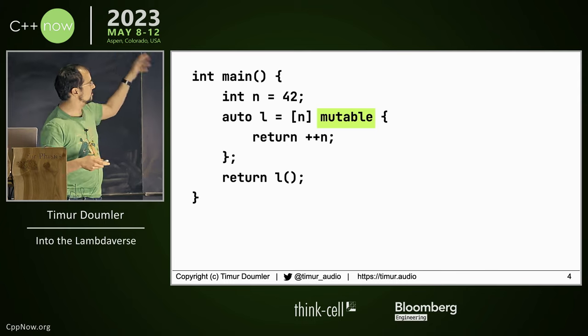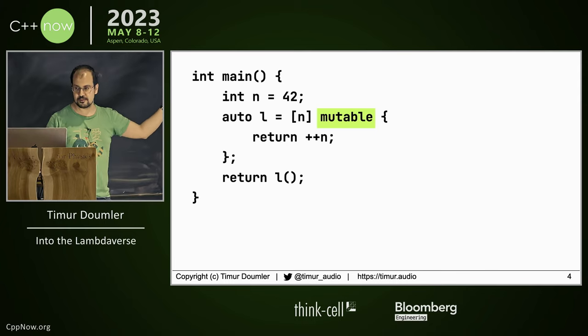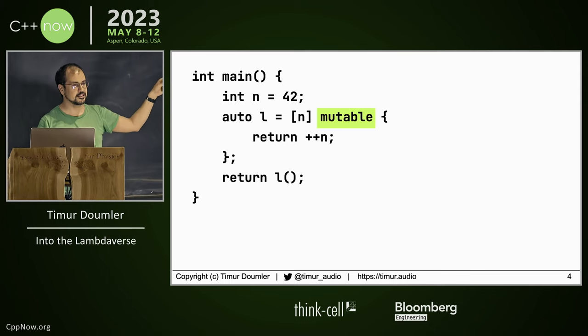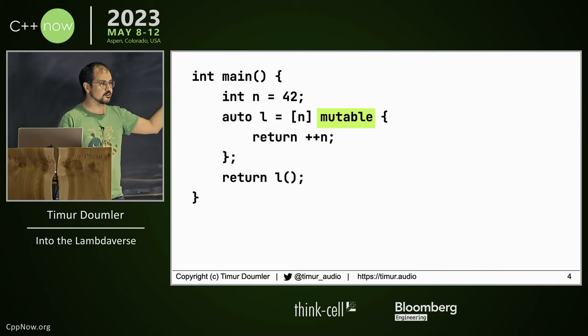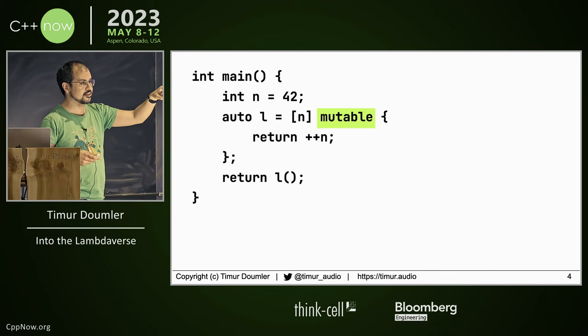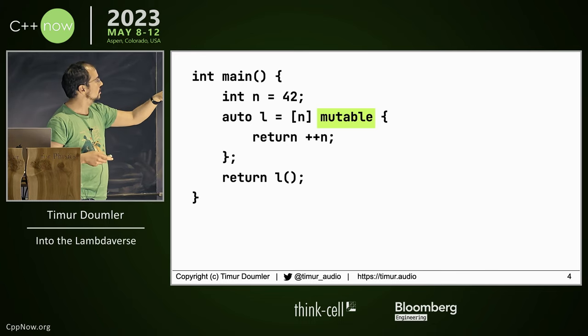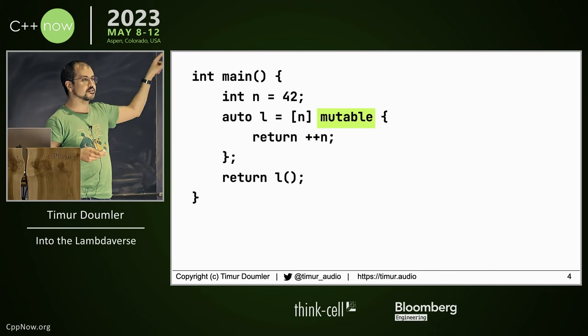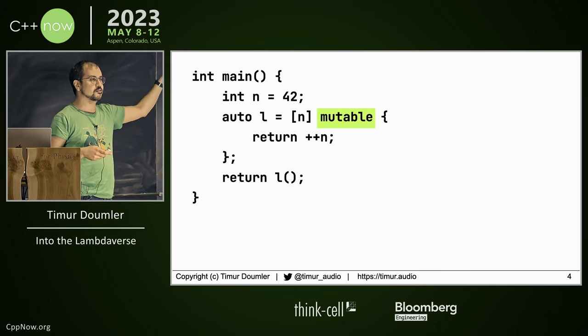Mutable. Okay, does this code compile? No. Why not? You need the parentheses. Not anymore — since C++23 you don't need the parentheses anymore.